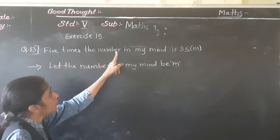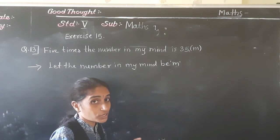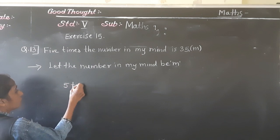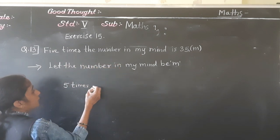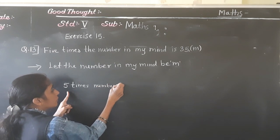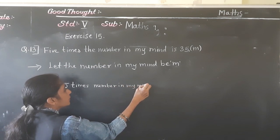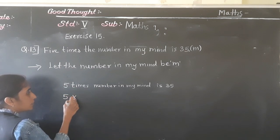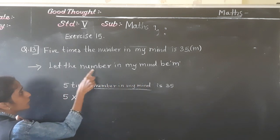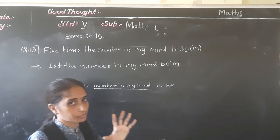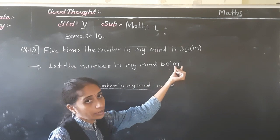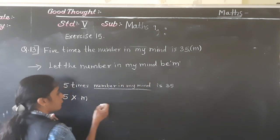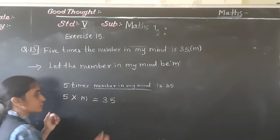5 times the number in my mind is 35. Times means multiplication. So 5 multiplied by n — since we let the number in my mind be n — is equal to 35. So 5n = 35. This is our equation.